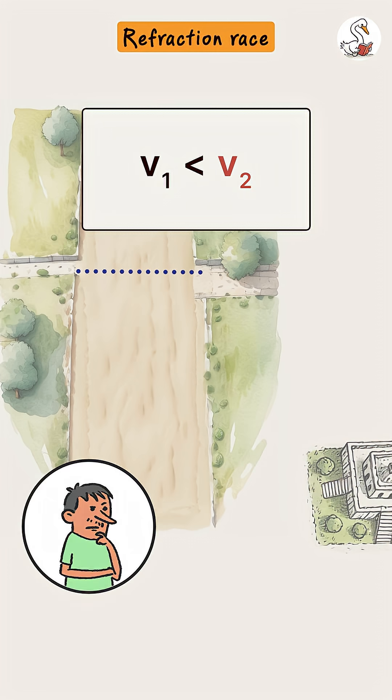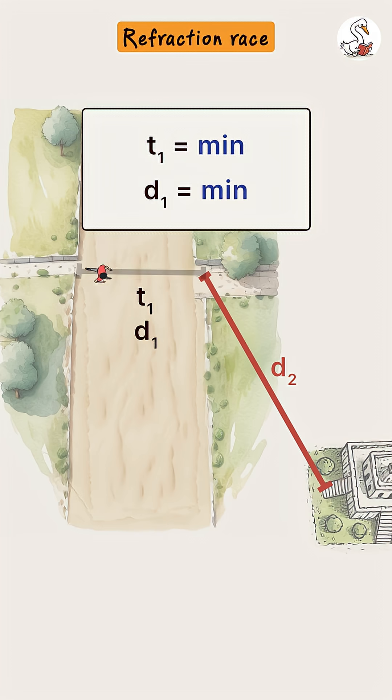Akbar thought differently. He wanted to spend least time on the sand, so he took a nearly vertical route straight towards the ground part. This did reduce his time in the sand, but increased his total distance on the ground a lot, making the overall time longer.